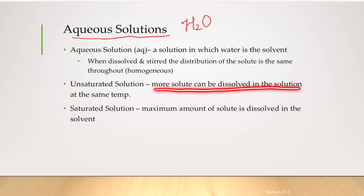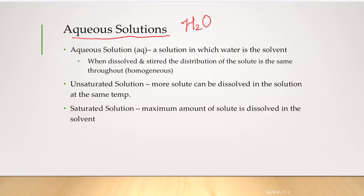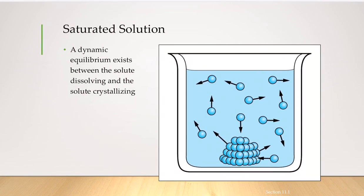In an unsaturated solution, more solute can be dissolved at the same temperature. In a saturated solution, the maximum amount of solute is dissolved and no more can be added. A saturated solution has a dynamic equilibrium between the solute dissolving and the solute crystallizing, so some undissolved solute remains at the bottom.